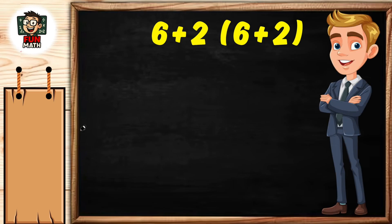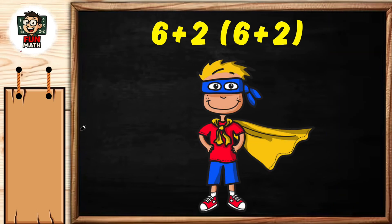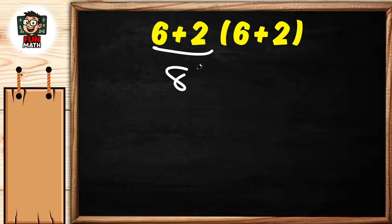Hello everyone, we are back with another good question. Let's take a quick look at our equation: 6 plus 2 equals 8, 6 plus 2 equals 8. There is hidden multiplication: 8 times 8 equals 64.